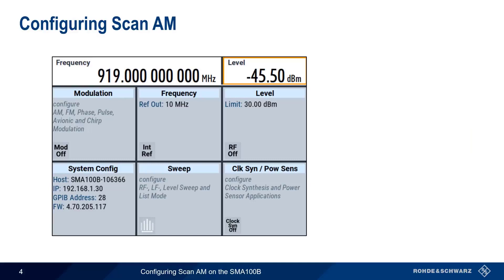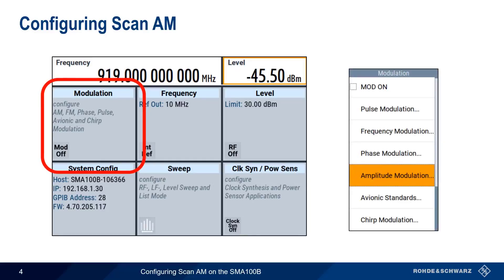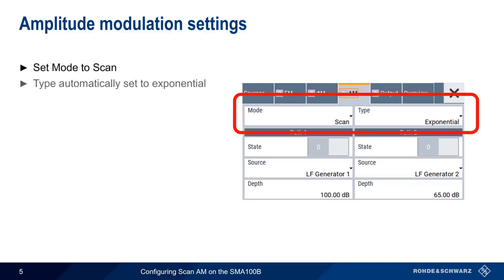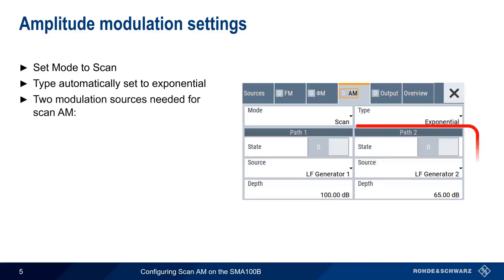It's very easy to configure Scan-AM through the SMA's graphical user interface. We start by tapping on the Modulation tile and then select Amplitude Modulation from the list of available modulation types. Next, we configure the AM parameters. The first step is setting Mode to Scan, which automatically changes the type to Exponential. To create the Scan-AM signal, two paths are used, one for each modulation type.